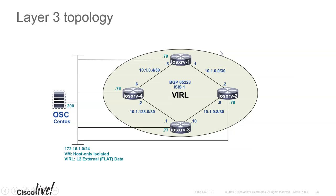From a Layer 3 topology standpoint, we have four routers and IOS XRV4 will be the route reflector. The OpenSDN Controller will be a route reflector client, and the other three devices will also be route reflector clients. This is important so that the BGP-LS information gets to the OpenSDN Controller. This is how you would typically have a production network — especially a large one — with multiple route reflectors so you don't have to fully mesh your BGP routers.